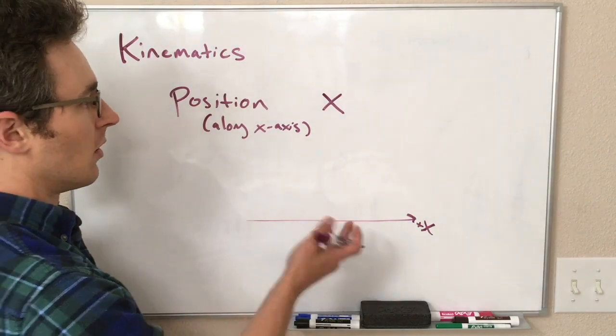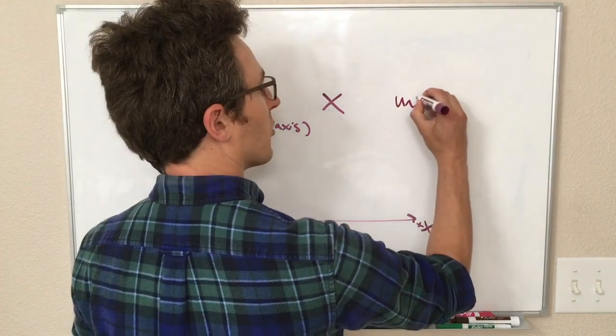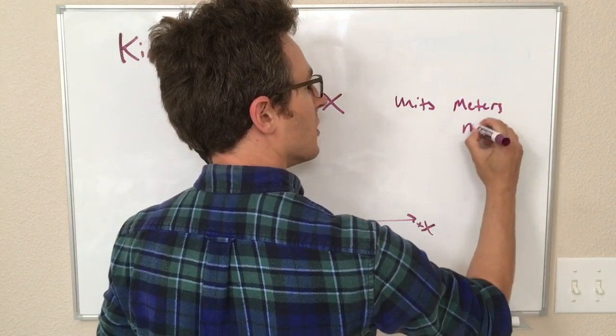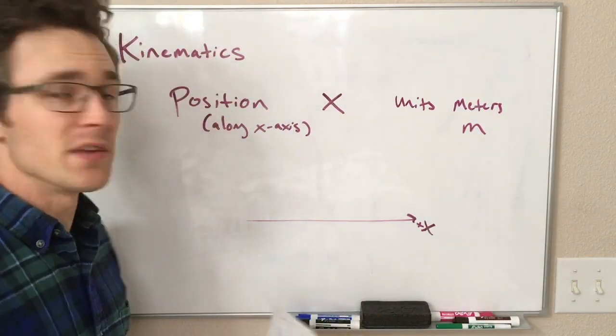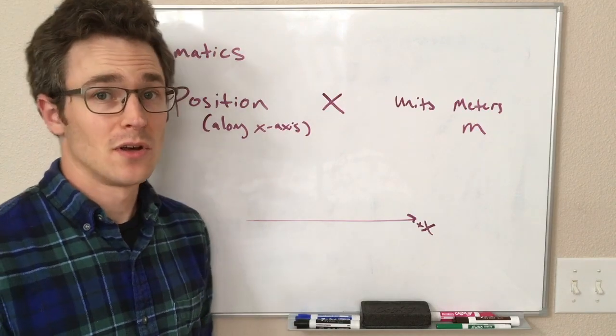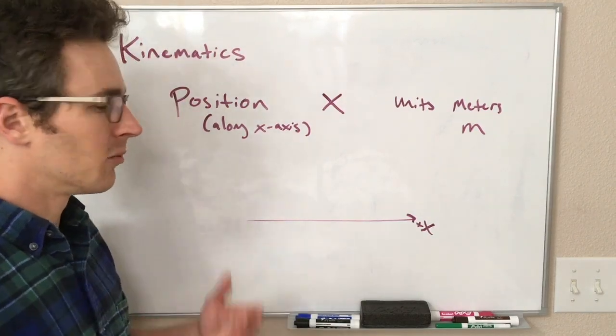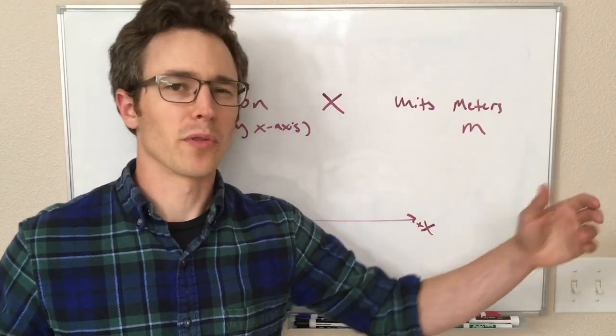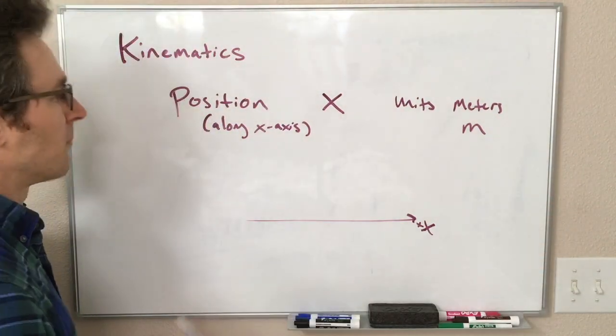Our units of position are meters. Of course there are lots of other units of position that we could use, but in this class we're going to stick with SI units, and our SI units of position are meters. So a meter is about three feet, a little more than three feet long.